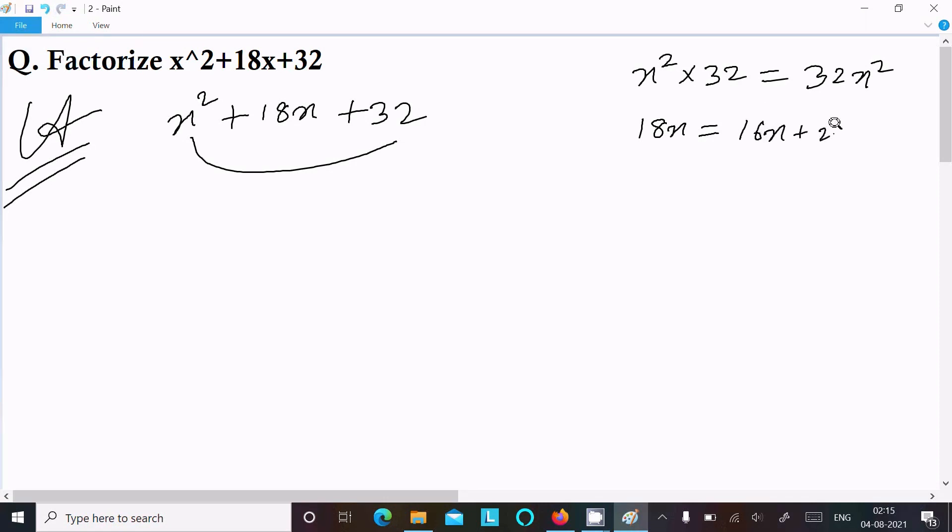Now if I take 16x plus 2x, 16 plus 2 equals 18. And if I multiply 16x into 2x, it equals 32x squared. So 32, these two are equal, so this is accepted.